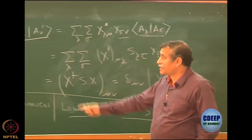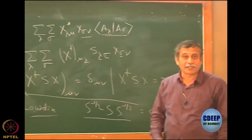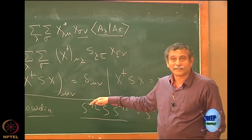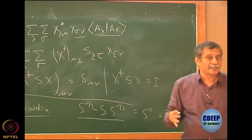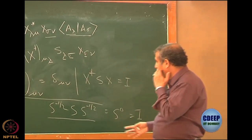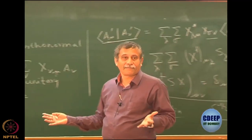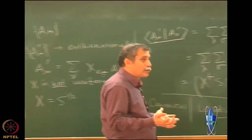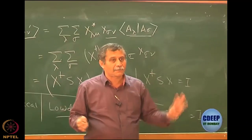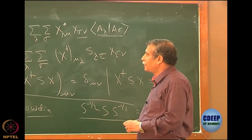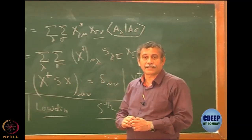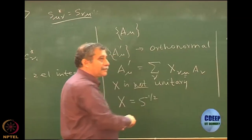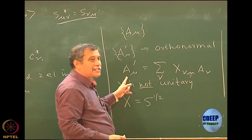It is important to remember that X† = X in this case — X is Hermitian, not unitary. Many people confuse this: for a unitary matrix, the inverse equals the conjugate transpose, but here X is Hermitian, meaning X† = X = S^{-1/2}. There can be other choices of X, but we will mostly work with X = S^{-1/2}. With this, I can orthonormalize the basis, going from A to A prime.